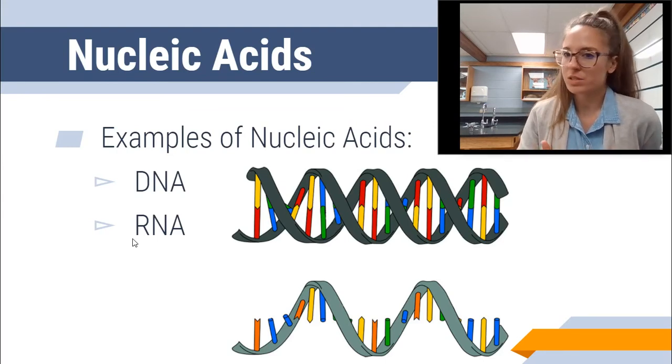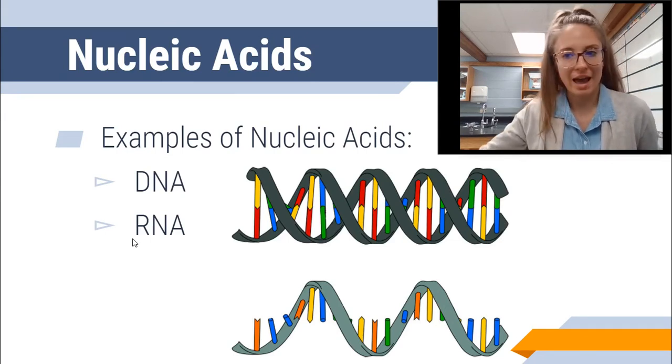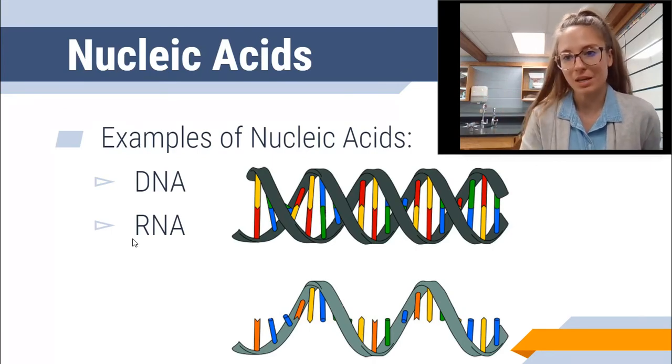RNA helps to carry out the function of DNA. So it's all well and good that DNA contains your genetic information, but RNA helps to then put that information into action to actually turn your hair the color that it's supposed to be.